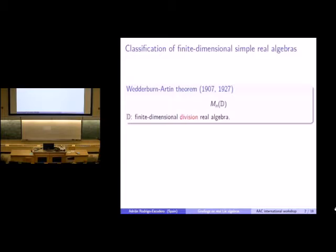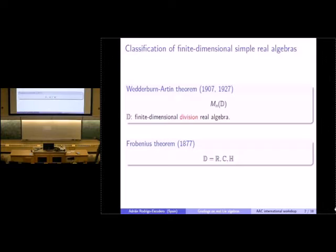What this theorem says is that to classify simple algebras, it suffices to consider division algebras. The other theorem is Frobenius' theorem, which says that the only finite-dimensional division real algebras are exactly three: the real field, the complex numbers, and the quaternions.